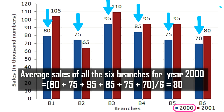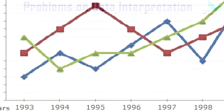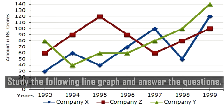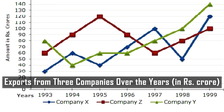Now let's look at line graphs. The following line graph shows export figures for three companies over the years in rupees crores. The amount axis runs from 0 to 150 crores, and the years shown are 1993 through 1999. The blue line is company X, the red line is company Z, and the green line is company Y.